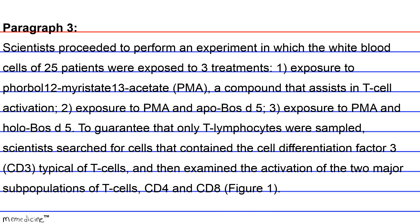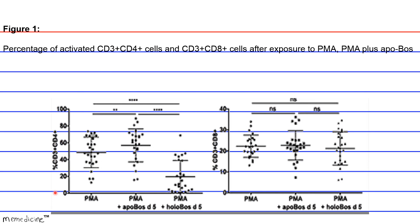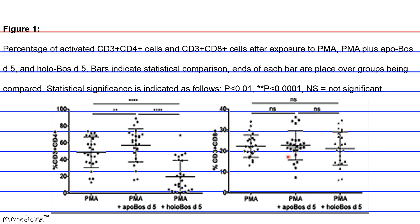This can be seen in Figure 1. Figure 1 shows the percentage of activated CD3+ CD4 cells and CD3+ CD8 cells after exposure to PMA, PMA plus apo BOS D5, and holo BOS D5. Bars indicate statistical comparison; ends of each bar are placed over groups being compared. Statistical significance is indicated as follows: p < 0.1, p < 0.0001, and NS for not significant.